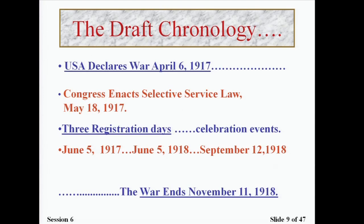The U.S. declared war on April 6th, 1917. Congress enacted the Selective Service Law on May 18th, 1917. There were three registration dates, called celebration events — you saw small parades and patriotic demonstrations. The first was June 5th, 1917. The next was June 5th, 1918. And the final registration was on September 12th, 1918. The end of the war was November 11th, 1918.